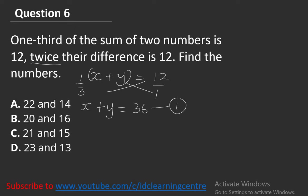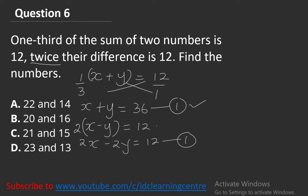The question continues: twice their difference equals 12. The difference is x minus y, so 2(x minus y) equals 12. Expanding: 2x minus 2y equals 12. This forms equation 2. From equation 1, make x the subject: x equals 36 minus y.